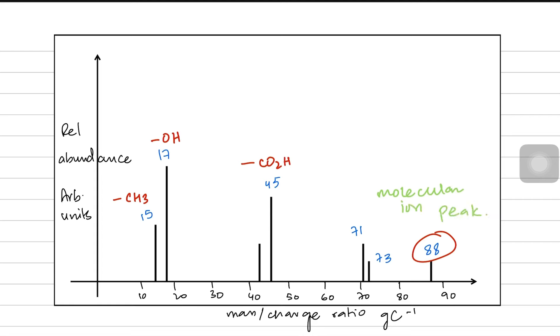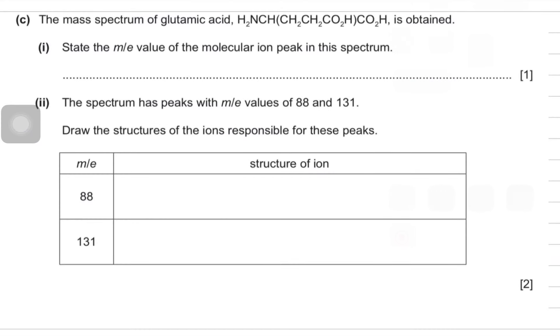Let's do this past paper question. It says the mass spectrum of glutamic acid is obtained. State the mass over charge ratio value of the molecular ion. So that molecular ion is without fragmentation, it has the complete molecular mass, so just measure the molecular mass and you would know.